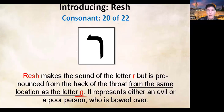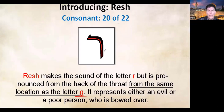Resh represents either an evil or a poor person who is bowed over — notice just the shape of this letter. Rabbis have filled in the blanks with meanings these letters carry, and they see the resh as being bent over. Many words in the Hebrew Bible beginning with resh carry negative connotations — 'rasha' means evil, 'rashaim' means an evil person, as in 'Blessed is the man who walketh not in the counsel of the rashaim.' Poverty is also represented, and the rabbis see in the formation of this letter something negative.